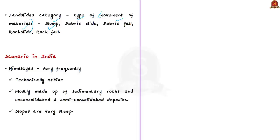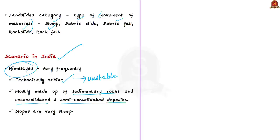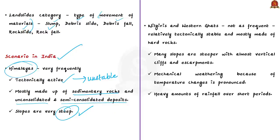In India, landslides occur very frequently in the Himalayas because: first, the Himalayas are tectonically active and relatively unstable; second, they are mostly made up of sedimentary rocks and unconsolidated and semi-consolidated deposits; and third, the slopes are very steep, aiding gravity-driven mass movement. On the other hand, landslides also occur in the Nilgiris and Western Ghats, though less frequently. This is because these regions are relatively tectonically stable and made up of hard rocks. However, many slopes here are steeper and have almost vertical cliffs and escarpments — a long steep slope at the edge of a plateau separating areas at different heights.